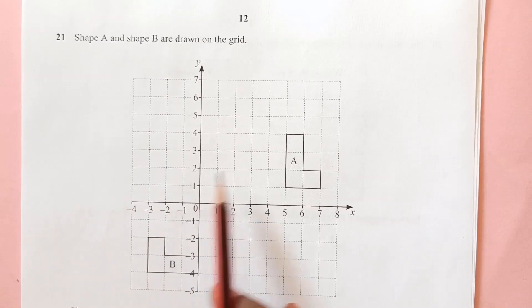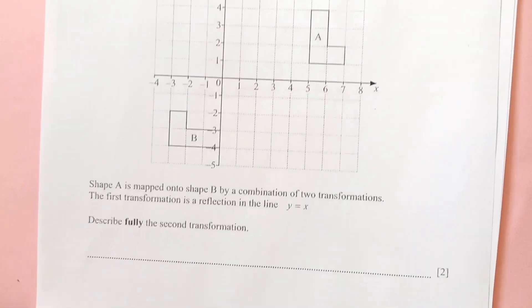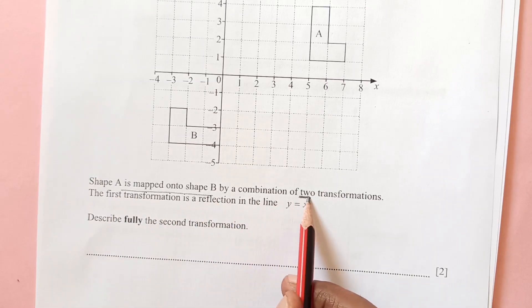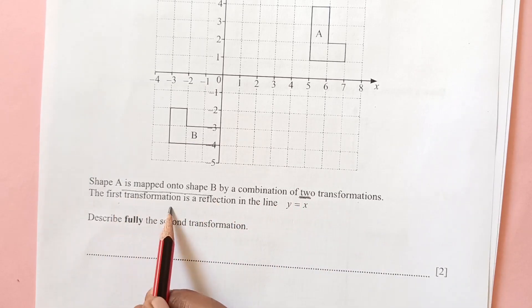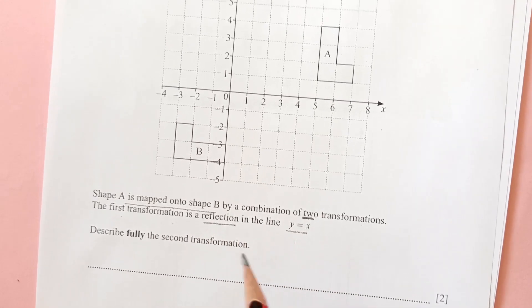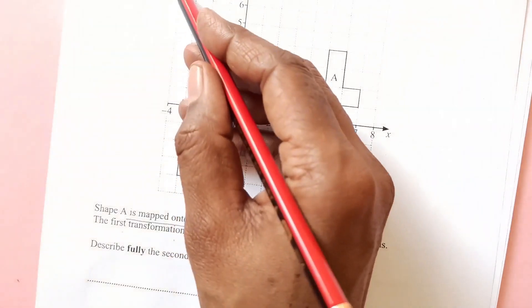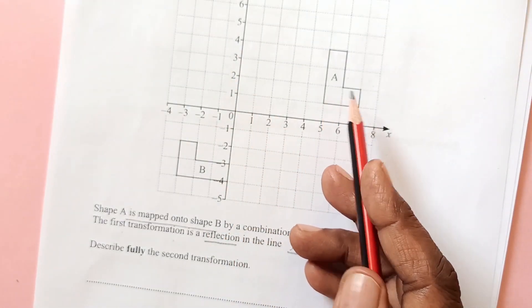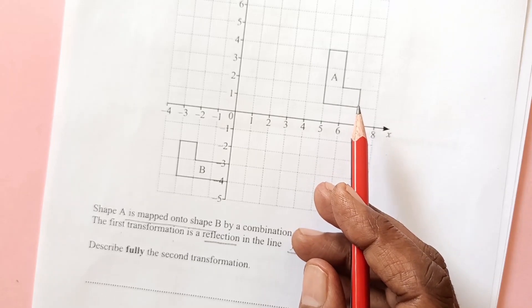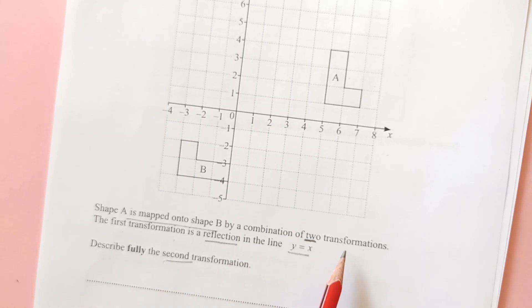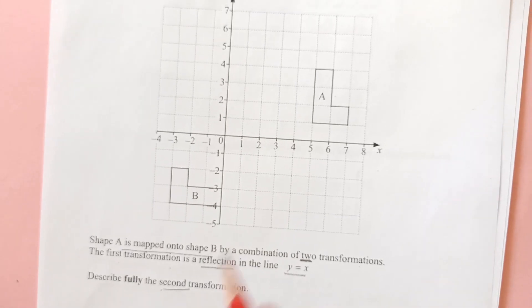Shape A and Shape B are drawn on the grid. Shape A is mapped onto B by a combination of two transformations. The first transformation is a reflection in y equals x. We need to describe fully the second transformation.